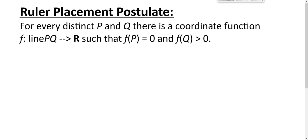This gets a lot of use for us. This one right here matters. The ruler placement postulate says that for every distinct P and Q there's a coordinate function f from the points on line PQ to the real numbers such that f(P) is 0 and f(Q) is positive. Well why do we do that?